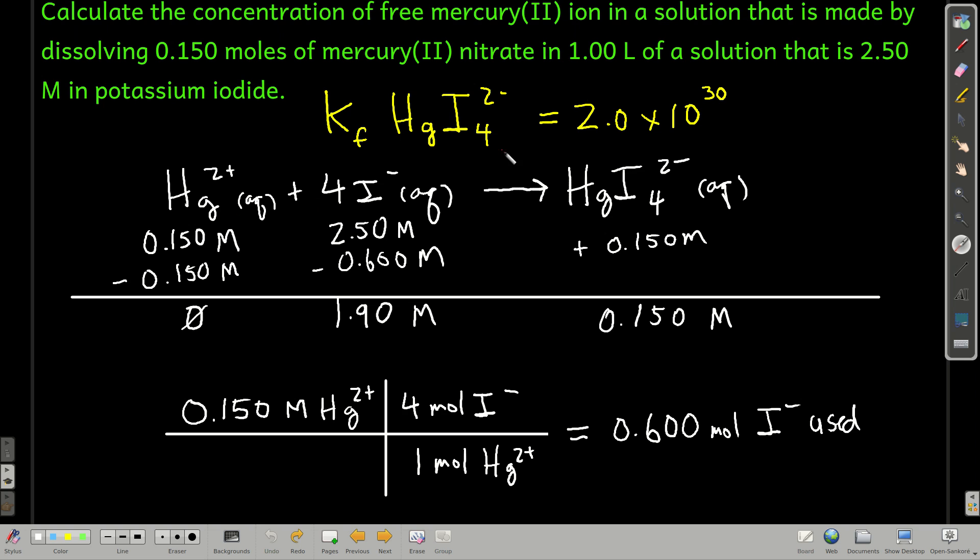But what we can do, because this is such a big Kf, we say okay, we have 0.150 moles per liter of mercury(II), 2.50 moles per liter of iodide, regular old stoichiometry limiting reactant problem down here. We find that if we have 0.150 moles per liter of mercury(II), and we use up 4 moles of iodide for every 1 mole of mercury(II), we use up 0.6 moles of iodide, less than we have here, which means that the mercury(II) will run out, and we'll have some iodide left over. So mercury(II) is the limiting reactant, and when this reaction goes to completion, we'll have 0 of the mercury(II) left. We'll still have 2.5 minus 0.6 is 1.90 moles per liter of the iodide, and we'll have 0.150 moles per liter of the complex.